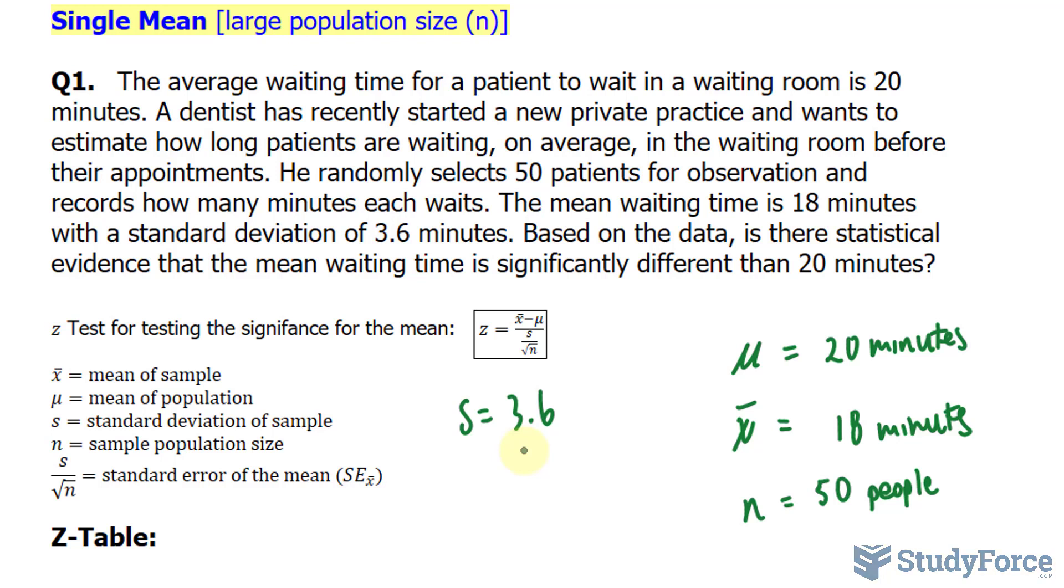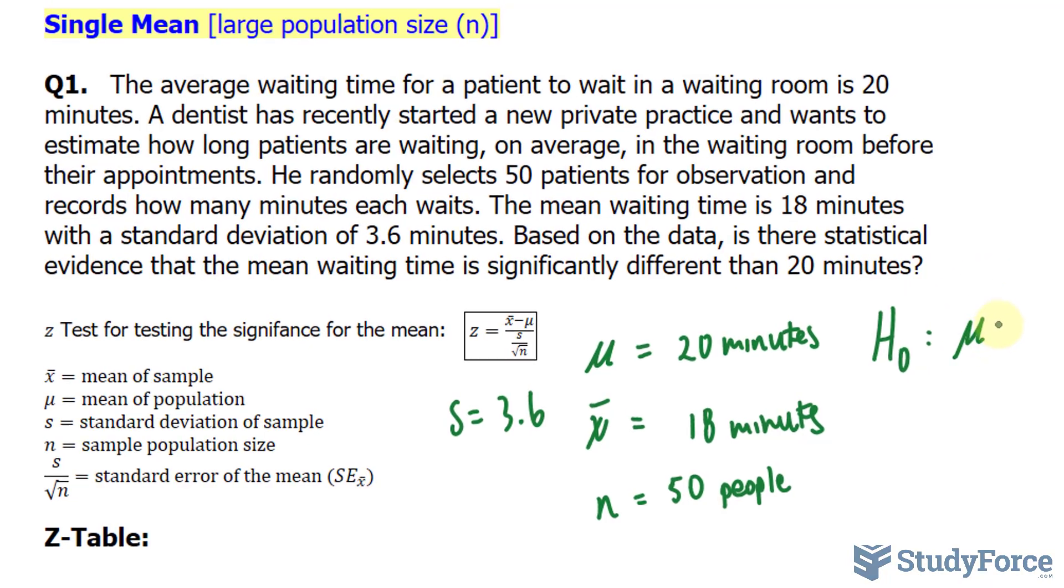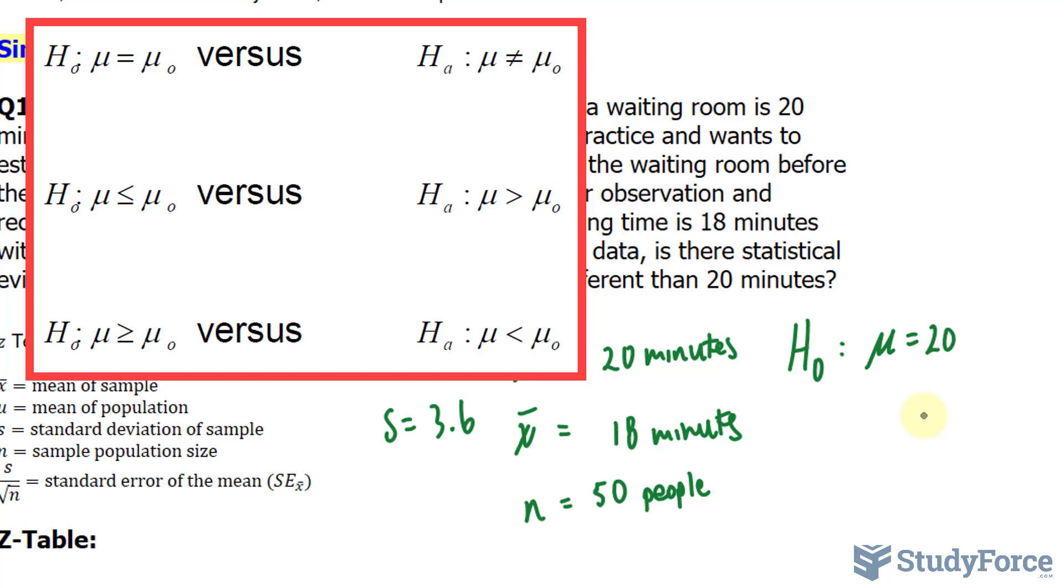Once I've written down everything that I know, I'll write down my hypothesis. So, I'll say that my null hypothesis, which we denote as H₀, will be μ is equal to 20. So, let's see if this is true or not. The alternative hypothesis, if we say that μ is equal to 20, the alternative will be μ is not equal to 20.